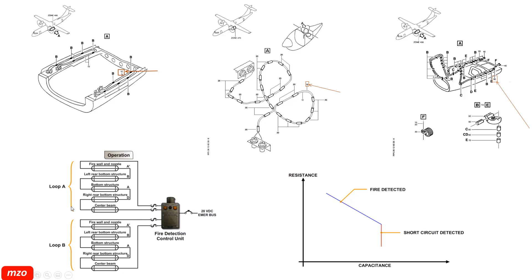The fire Loop A and Loop B have the fire sensing element. This is the fire sensing element and its location. The engine has the fire sensing element — the forward and the rear. The engine jet pipe also. What you can see: two wires — this is Loop A and this is Loop B. How to detect fire: if we get fire, the fire sensing element resistance decreases, then capacitance increases. In this condition, the fire detection control unit understands this as fire.